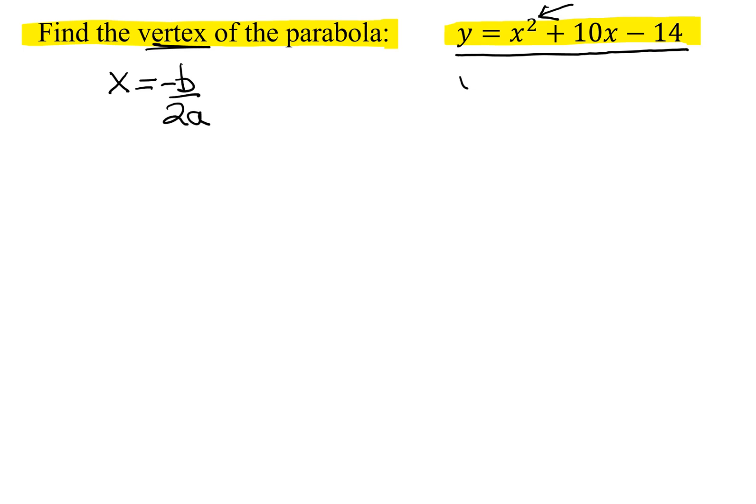So I'm going to compare this to y equals ax squared plus bx plus c. In our case, what is a? a is the coefficient of x squared, so it's 1. b is the coefficient of the x term, which is 10. I don't need c as it's not in my formula.